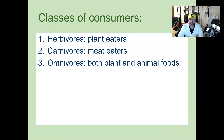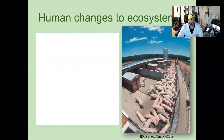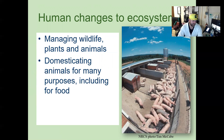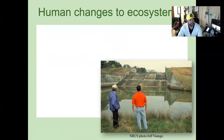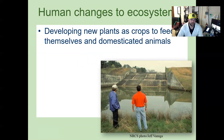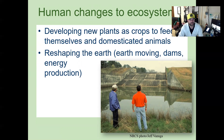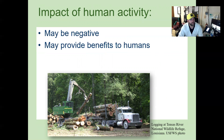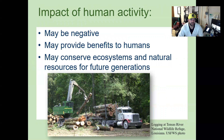So I mainly try to just be more of a carnivore. Moving on to human changes to ecosystems: managing wildlife, plants, and animals; domesticating animals for many purposes including for food. Human changes to the ecosystem also include developing new plants and crops to feed themselves and domesticated animals, reshaping the earth — earth moving, dams, energy production — and the impact of that may be negative, may provide benefits to humans, or may conserve ecosystems and natural resources for future generations.